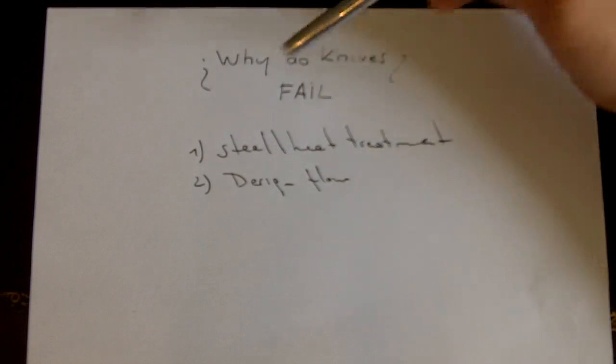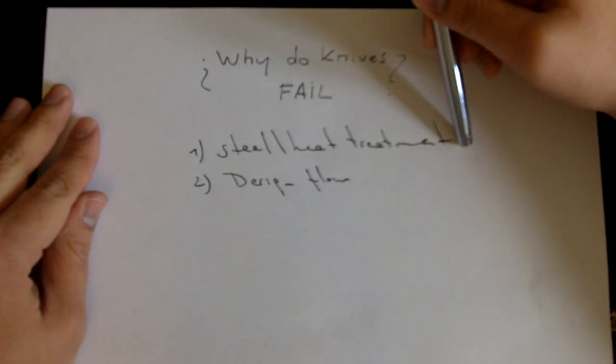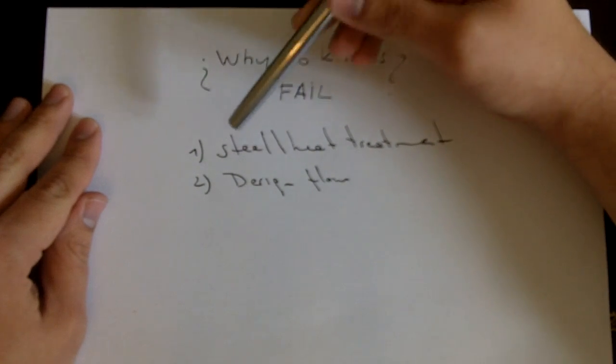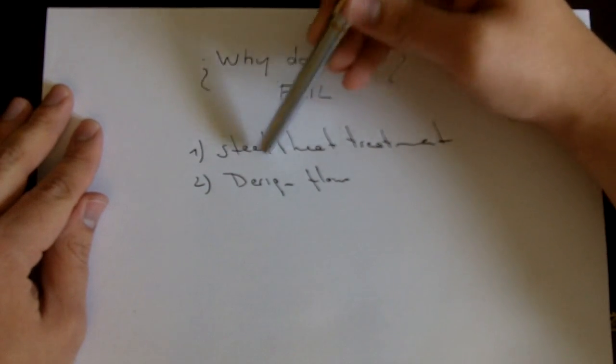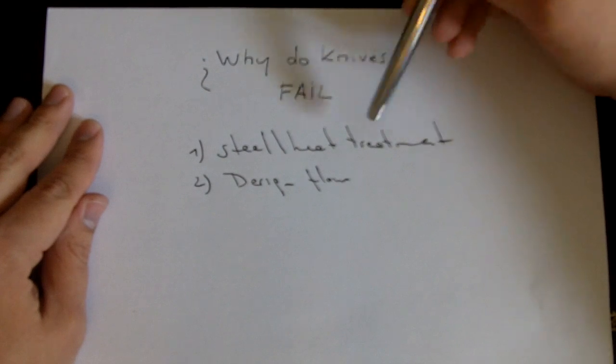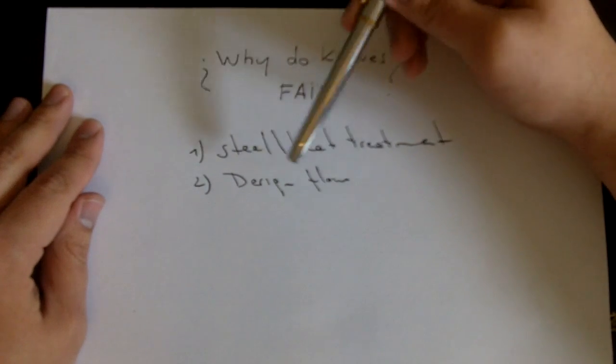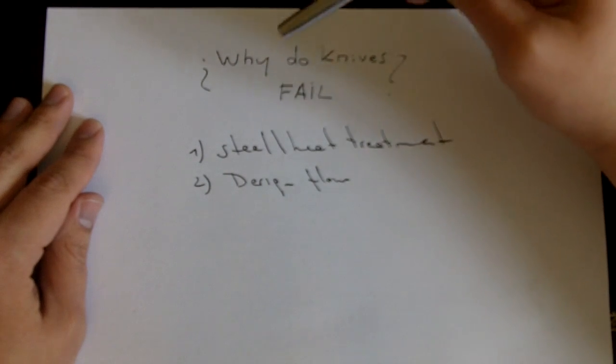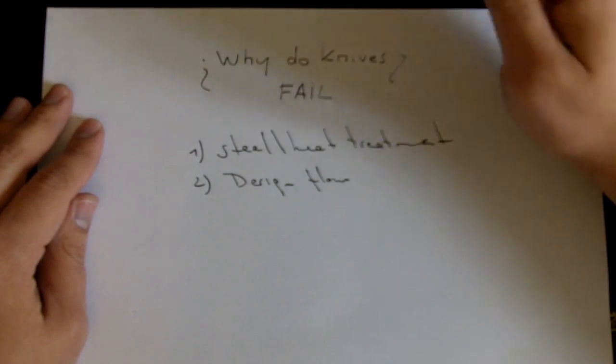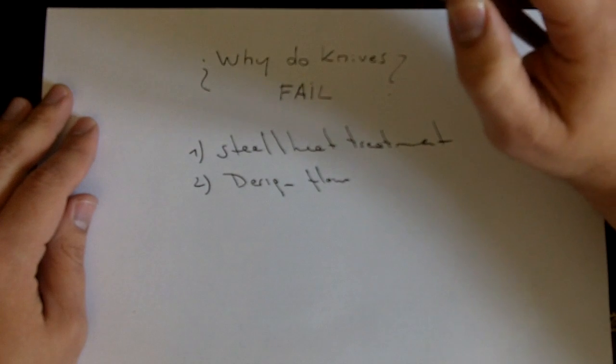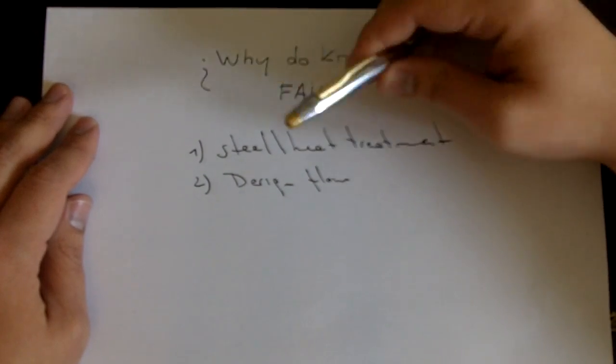Basically, it comes down to two points. First one is a problem in the steel and heat treatment, mostly about the heat treatment. Sometimes people get fixated with steels. The best steel on the planet is going to be performing very poorly with a poor heat treatment. Even a mediocre steel, properly heat treated, will do well. It's also about a design flaw. It's the second most common problem in terms of knives failing. A design decision was made poorly and it either compromises the integrity of the blade or the handle.